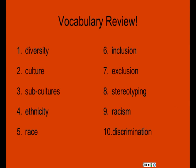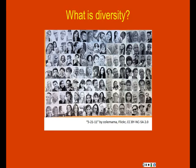Number one: diversity. Two: culture. Three: subcultures. Four: ethnicity. Five: race. Six: inclusion. Seven: exclusion. Eight: stereotyping. Nine: racism. Ten: discrimination.